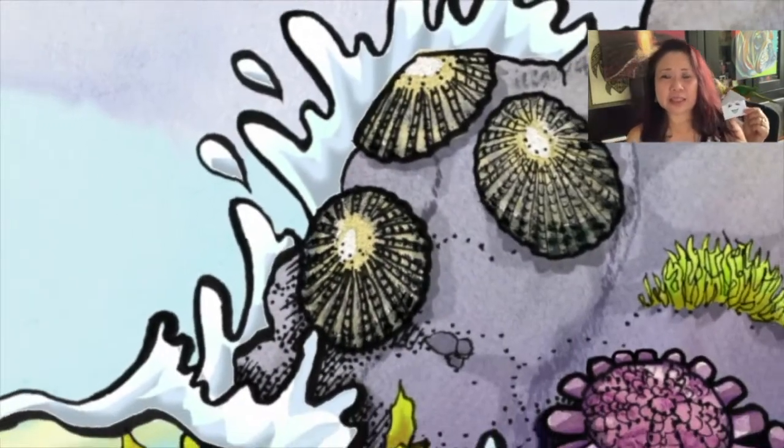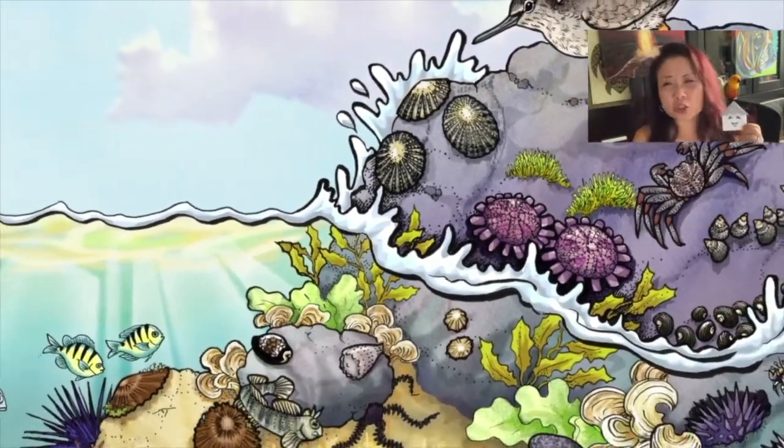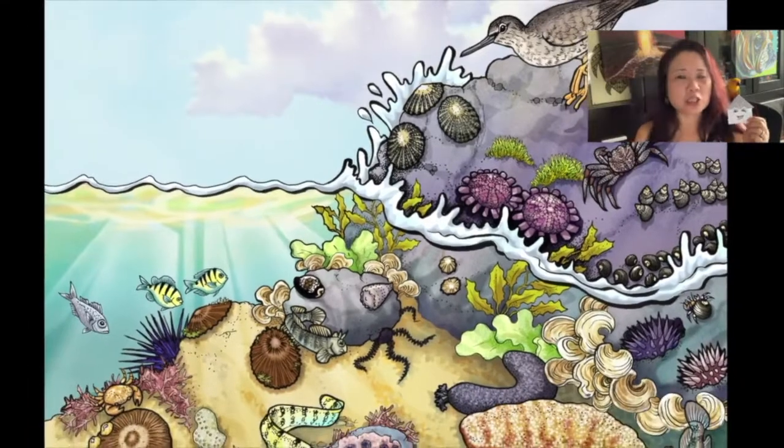An opihi is a Hawaiian limpet that's kind of like a delicacy here in Hawaii. They're found on these rugged shorelines and they cling really tightly to rocks.